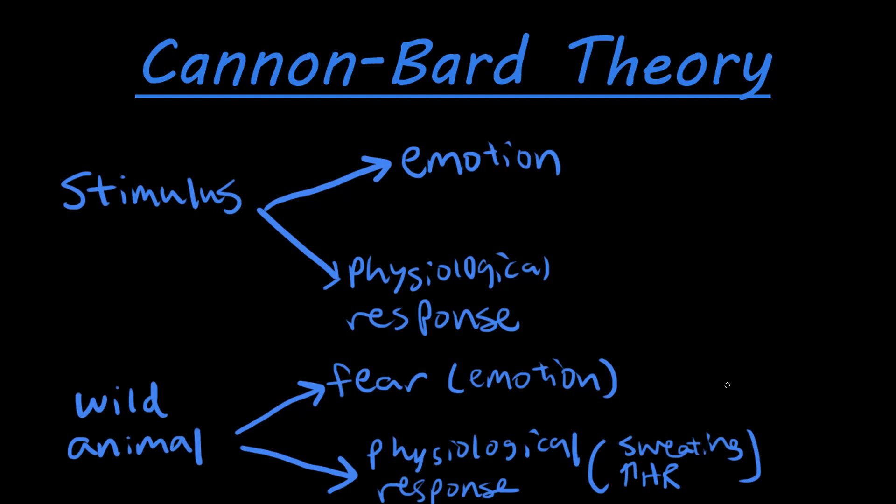To recap, according to the Cannon-Bard theory of emotion, we have a stimulus — some kind of stimulus — and this elicits emotion and a physiological response from our body at the same time, independently of each other. The emotion does not cause the physiological response, and the physiological response does not cause the emotion; they occur independently at the same time.